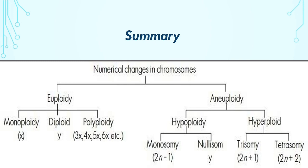In hyperploidy there is addition of chromosomes — that is, trisomy and tetrasomy. In hypoploidy there is a decrease in the number of chromosomes — that is, monosomy and nullisomy.